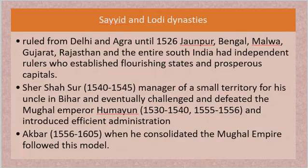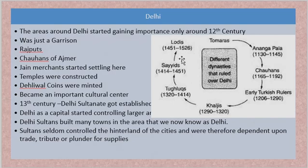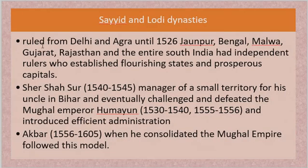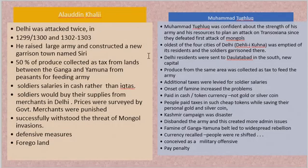After the Khaljis and Tughlaqs came the Sayyid and Lodi dynasties — from 1414 to 1451 and 1451 to 1526. They ruled from Delhi and Agra. Meanwhile, Bengal, Malwa, Gujarat, Rajasthan, and South India had independent rulers who had established flourishing states and prosperous capitals. The Sultanate could not annex them; however, the Sayyid and Lodi dynasties still had a larger empire because of the consolidation and expansion done during earlier periods.